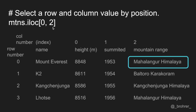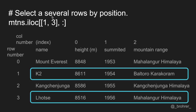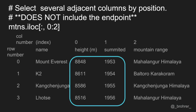We can pull out a single value by specifying both the row and column position. We can also pass a list of positions to cherry-pick certain rows and/or columns, or use the colon range operator to get a contiguous set. Note that unlike .loc with labels, .iloc does not include the endpoint — in this case it returns only columns 0 and 1 and does not return column 2.